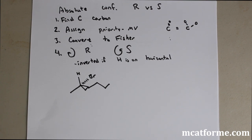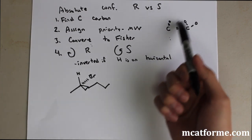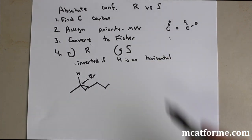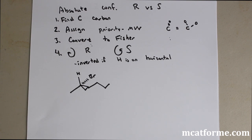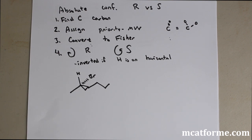The rules go like this. First, find the chiral carbon, then assign priority based on molecular weight. One thing to keep in mind: if you have a carbonyl carbon, it's treated as having two oxygens. So a C=O will have higher priority than a C-OH. Then what I do — which some people may or may not like — is convert the molecule into a Fischer projection. This lets you read the absolute configuration from the projection, so you can handle both types of problems at once.